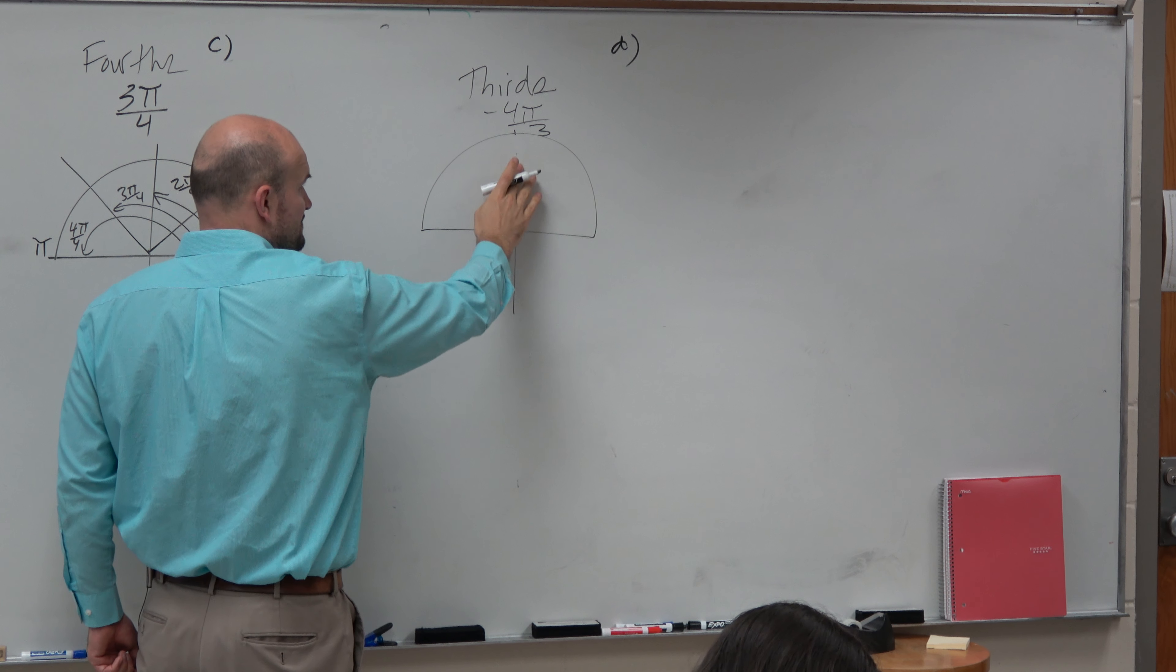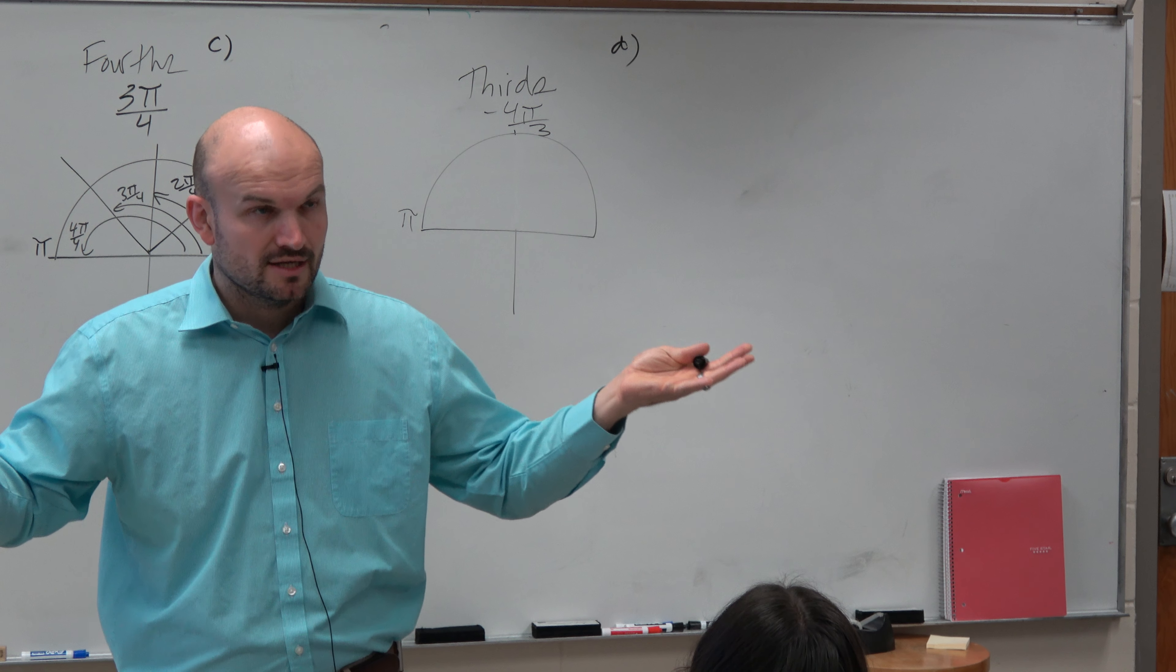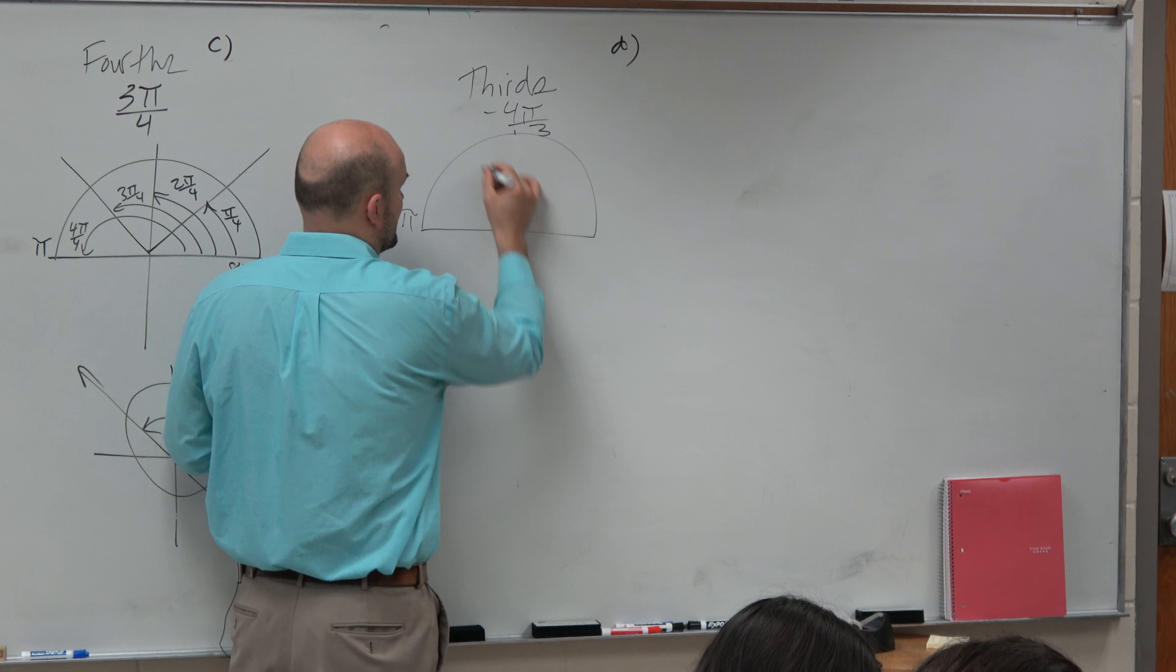But I'm just going to erase this for a second because, again, I know that half of that circle measures π. So if I want to break this into thirds, I really don't want the y-axis in there to confuse me.